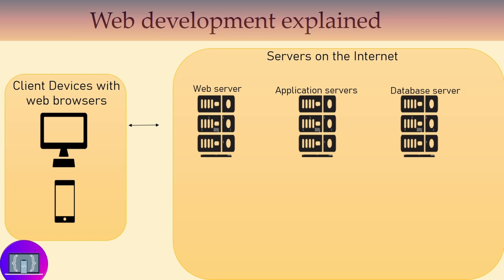Client devices with browsers are going to communicate with these web servers to request files which they can display. The first communication is between the client devices and the web server, and this communication is a request for front-end code files. These front-end code files are HTML, CSS, or JavaScript files, which the web browser is going to interpret and display the information appropriately.